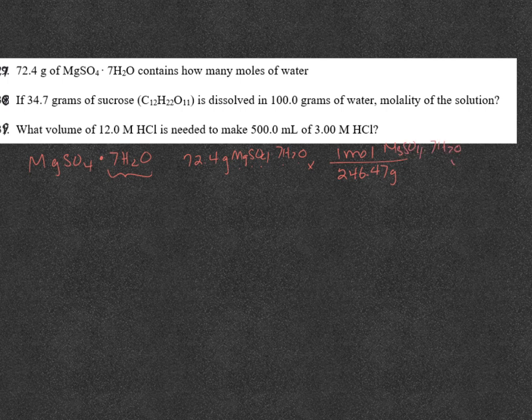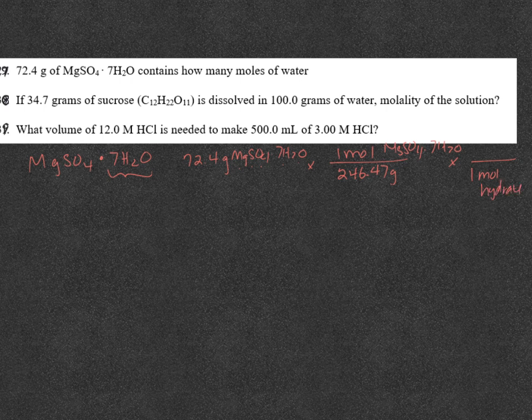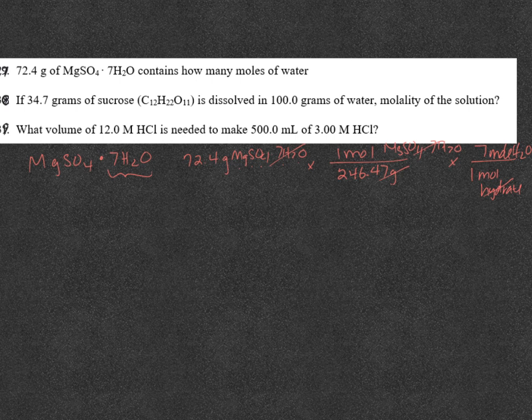Now, this is one mole of MgSO4, 7H2O. Now, if I want to know how many moles of water, this seven gives me my mole ratio. There's seven moles of water per one mole of this whole thing. So one mole of the hydrate has seven moles of water in it. Cancel my units. And I get 2.06 moles of water.